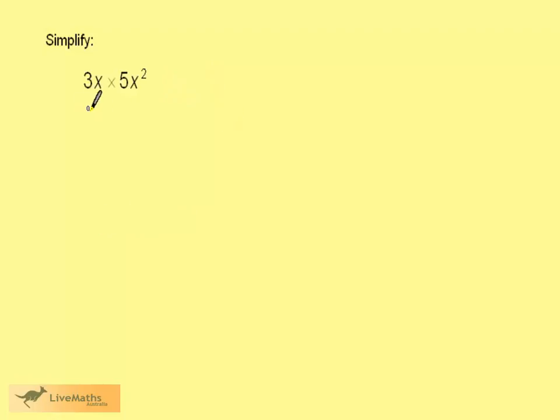We now have 3x times 5x squared. This is 3 times x multiplied by 5 times x squared. Reordering, we have 3 times 5 times x times x squared. 3 fives we know are 15, and x times x squared is x cubed.